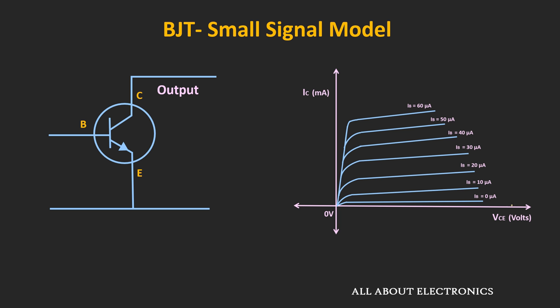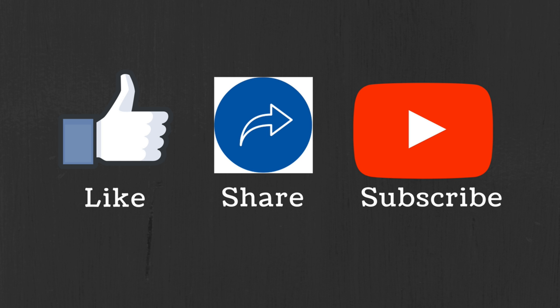So far, while drawing the large and small signal models, we have assumed that even if there is a change in the collector-to-emitter voltage, there is no change in the collector current. But actually, the collector current does change with the change in VCE — this effect is known as the early effect. In the next video, we will discuss it in detail and take it into account in the small signal model. I hope you understood the small signal model of the BJT. If you have any questions or suggestions, let me know in the comment section below. If you liked this video, hit the like button and subscribe to the channel.